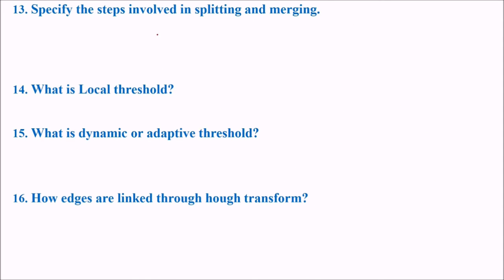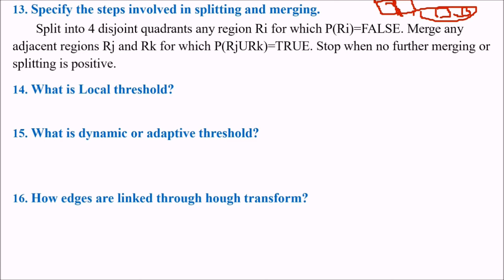Specify the steps involved in splitting and merging. Splitting means decomposing. Merging means combining. Split into 4 disjoint coordinates in the region R for which say some value is false. And you merge adjacent region for which some value P(Ri U Rk) is true. Stop when no further merging or splitting is positive. So actually these are the steps.